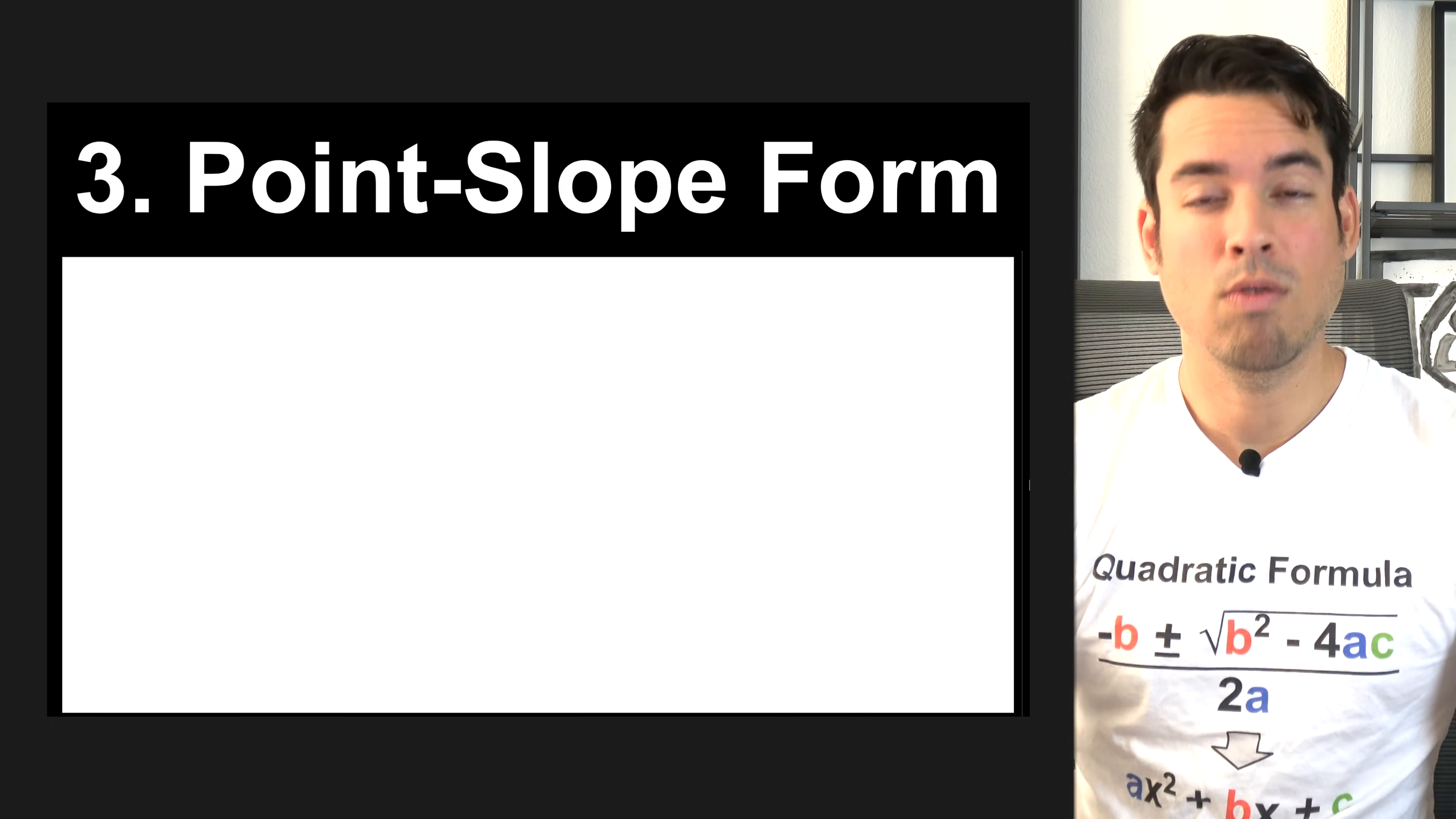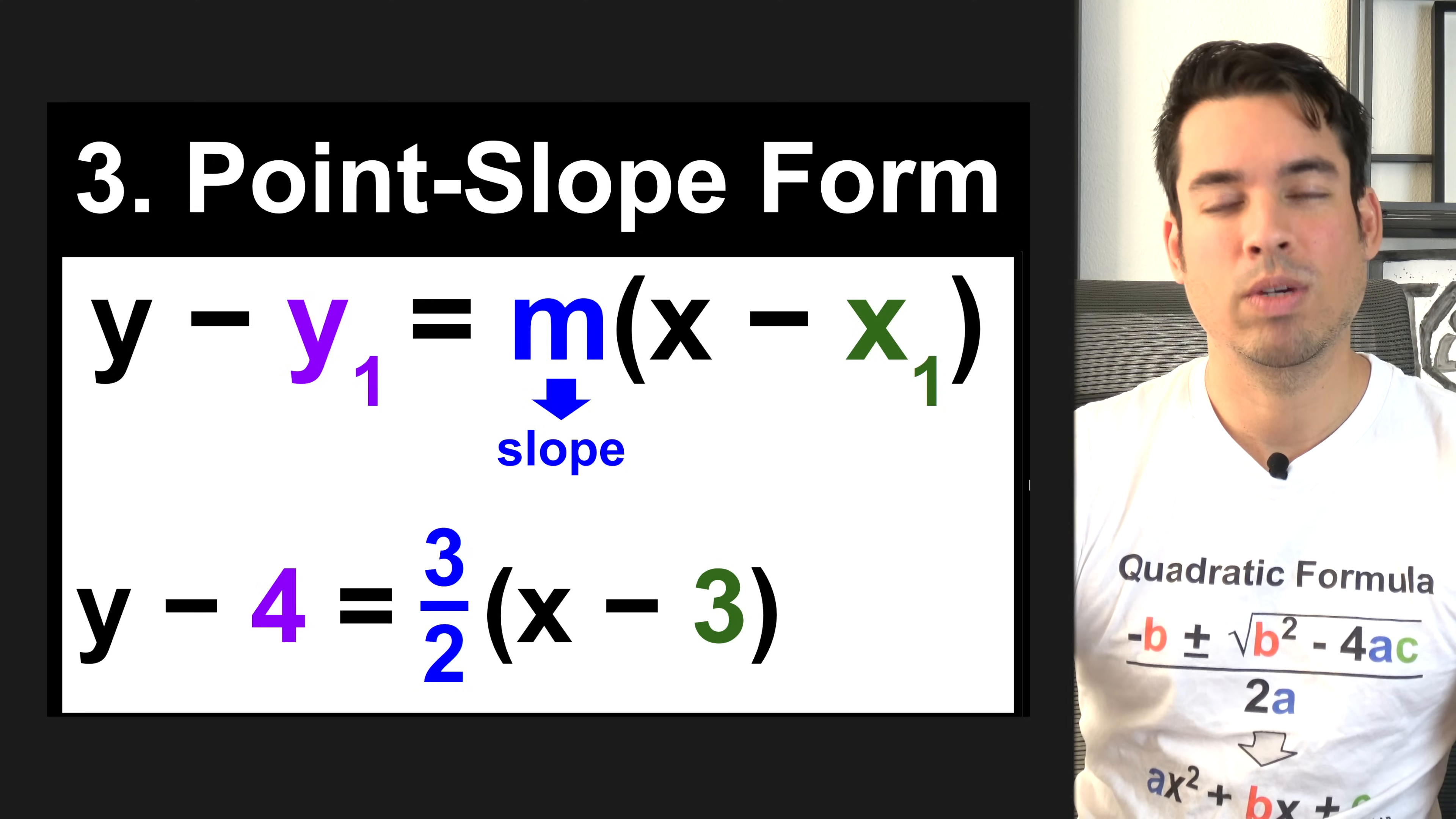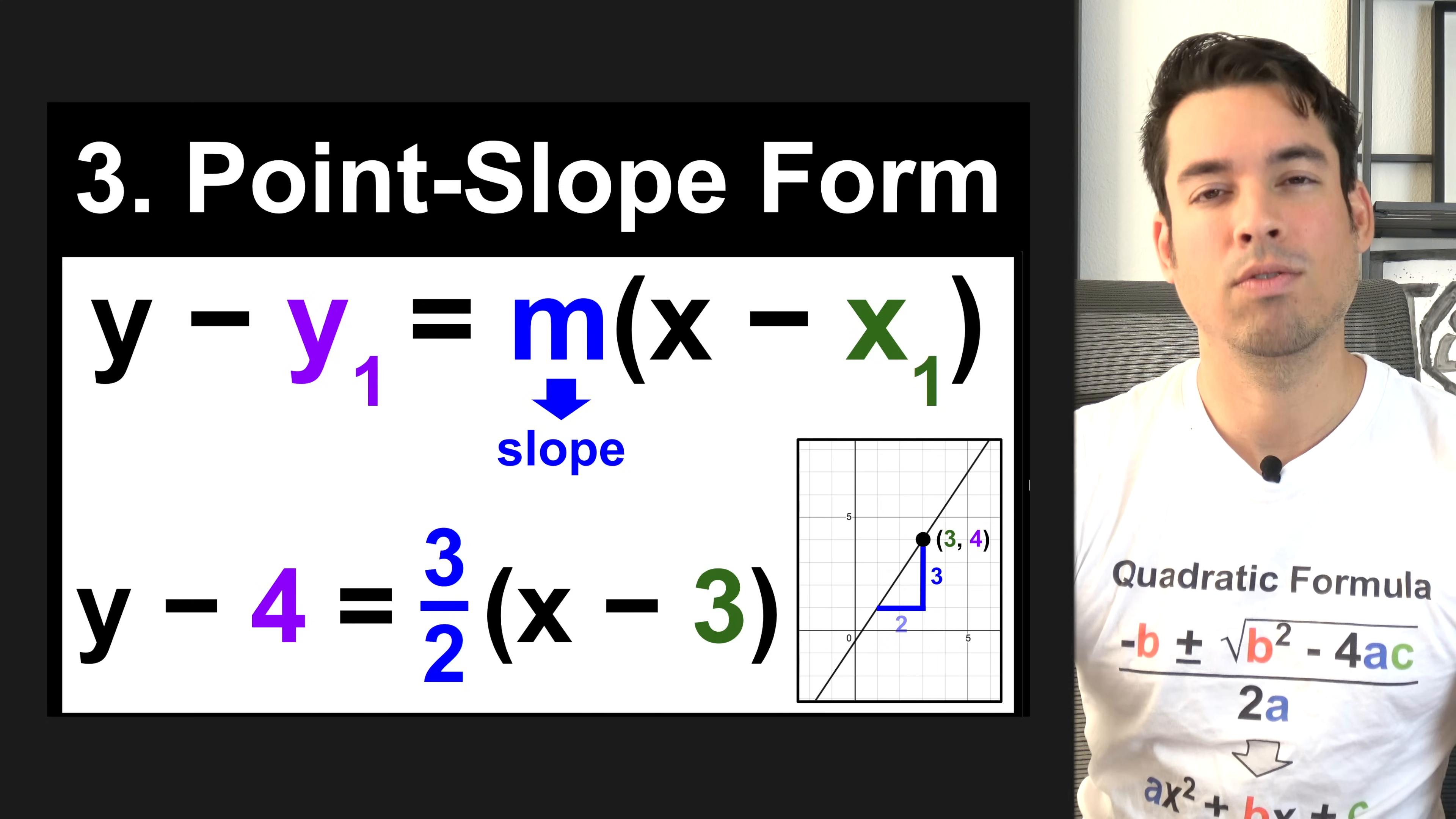Next, we have point slope form. Point slope form is Y minus Y1 equals M times X minus X1. M represents the slope, and X1 and Y1 are any point on the line. Here's a quick example: Y minus 4 equals 3 halves times X minus 3. This means that on the graph, the point 3, 4 is on the line, and this has a slope of 3 halves, which means there is a rise of 3 and a run of 2.